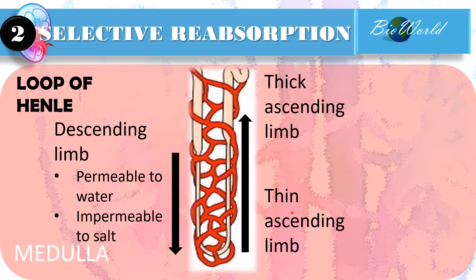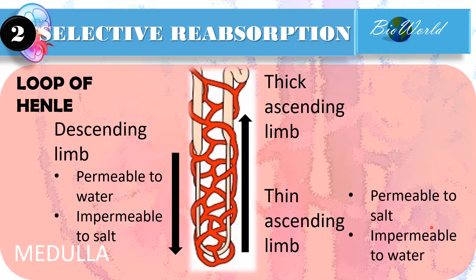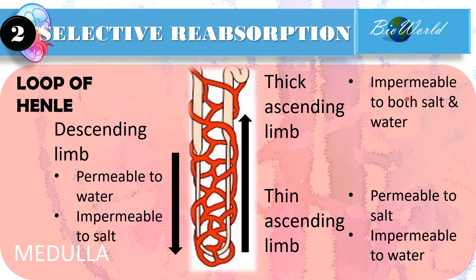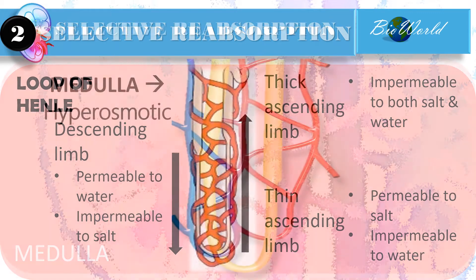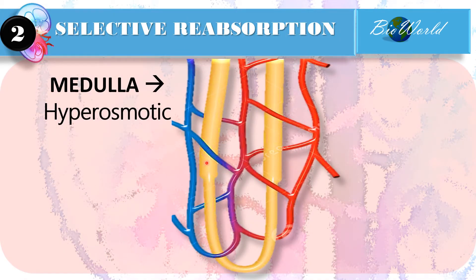The thin ascending limb is permeable to both salt and water, meaning that the salt in the filtrate can diffuse into the vasa recta but the water cannot. However, the thick ascending limb is impermeable to both salt and water. Now that we know the structure and characteristics of the loop of Henle, let's move on to discuss the selective reabsorption process at the loop of Henle.